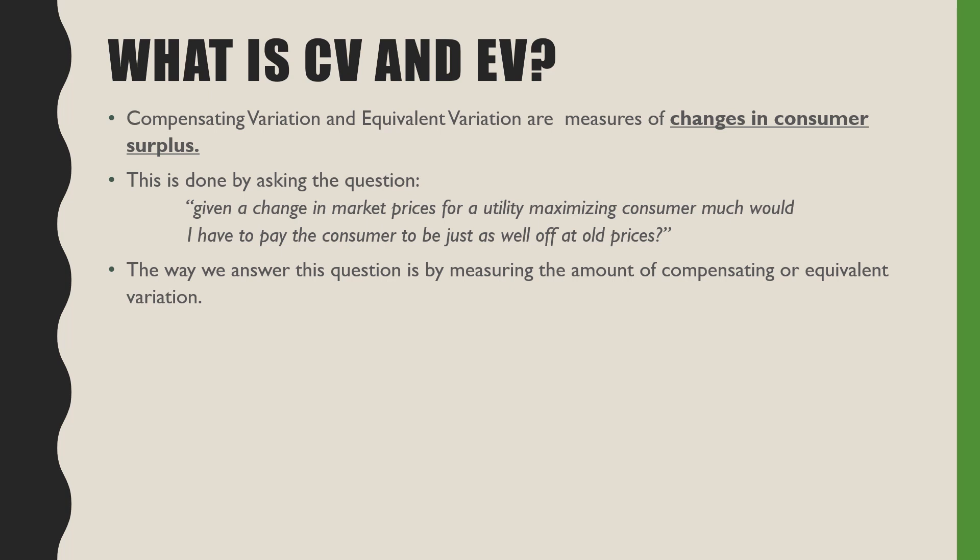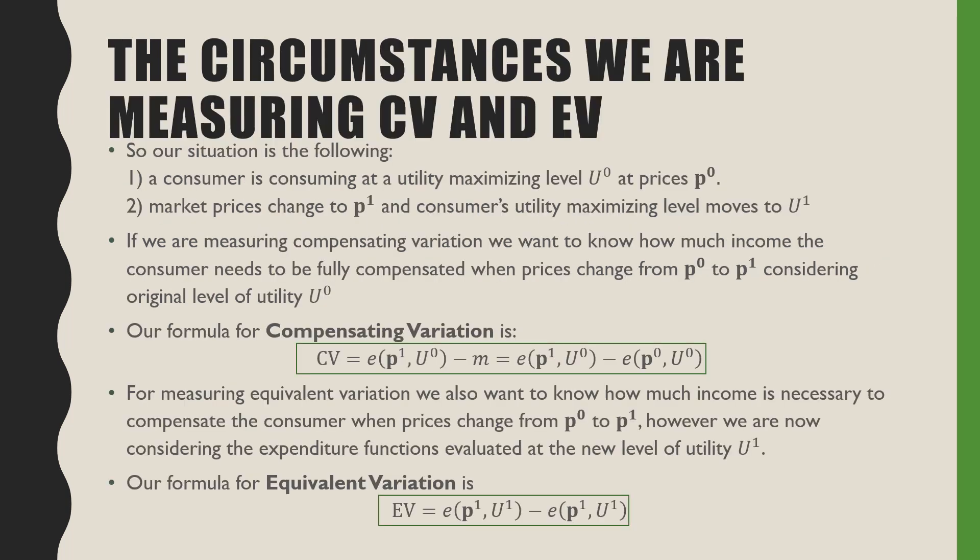The way we answer this question is by measuring the amount of compensating or equivalent variation present. Our situation is the following: a consumer is consuming at a utility-maximizing level of u0 at prices p0. The market prices then change to p1, and the consumer's utility-maximizing level moves to u1.